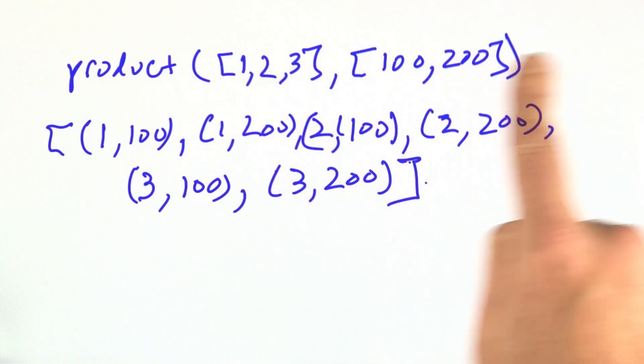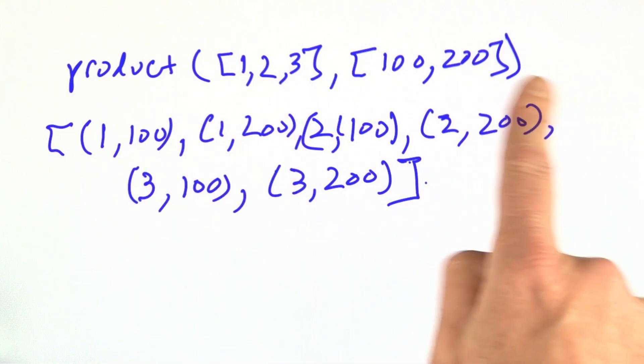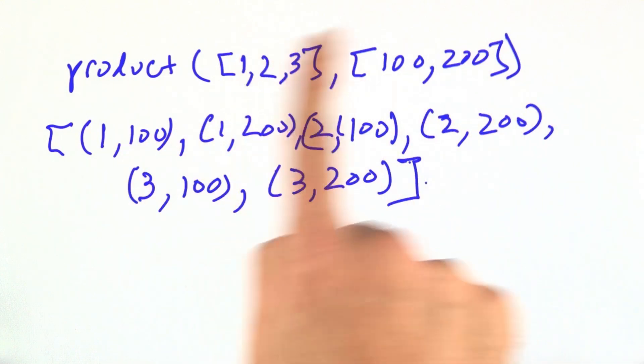However many lists it's given, it picks out one element from each, puts that into a tuple, and does that for every possible combination of elements from A, B, and whatever else there is there.